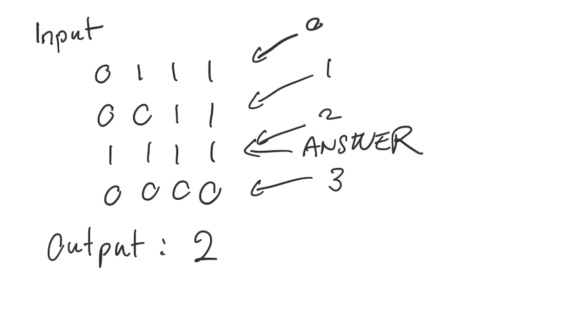One important feature of this matrix is that the rows are sorted — all the zeros come before all the ones. So each row is sorted.